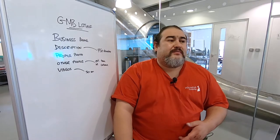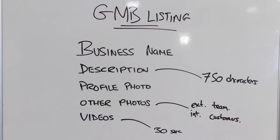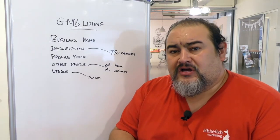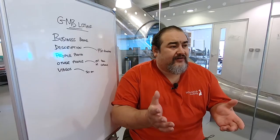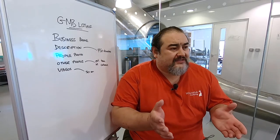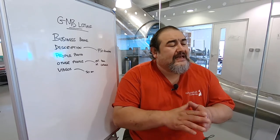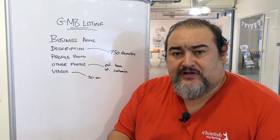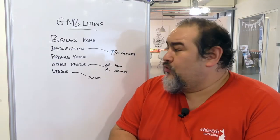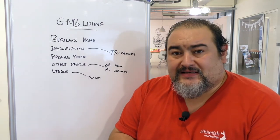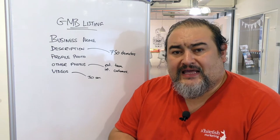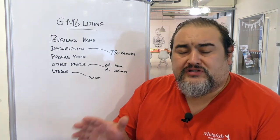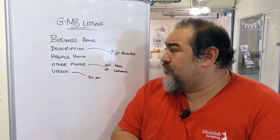First and foremost, your business name. Make sure you just put in your business name as it is. Don't add in any kind of locations or keywords unless you are known as, say, ABC Accountants and that word is actually part of your name. Leave off any location tags and keywords — use those in your main description later on.